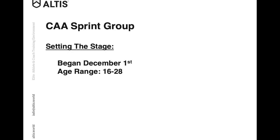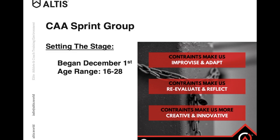Now we'll switch gears and move into the Chinese Athletics Association sprint group that I spent last winter working with. I began with this group on December 1st of last year, and they range in age from 16 to 28 years old. Starting December 1st was a little later than ideal, and along with a few other things we'll touch on, there were a handful of constraints in implementing the strength and power training. Shout out to Coach Brett Bartholomew and his great infographic about constraints — they make us improvise and adapt, reevaluate and reflect, and make us more creative and innovative. It tied extremely nicely into my experience with this Chinese group.